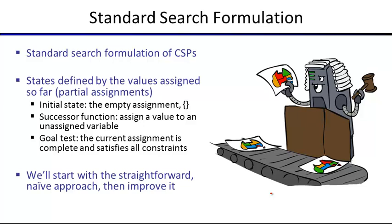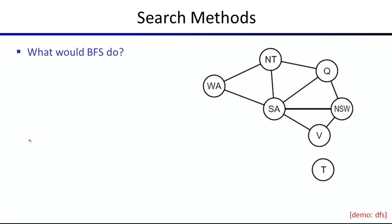So how do we solve these problems? As a starting point, let's put a CSP into the standard search formulation. The initial state is the empty assignment, the successor function picks any unassigned variable and assigns it any domain value, and the goal test checks that all constraints are satisfied and all variables are assigned. This works for small problems, but the branching factor is enormous.